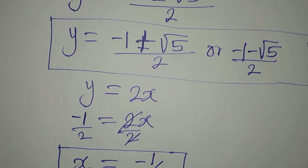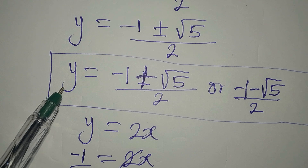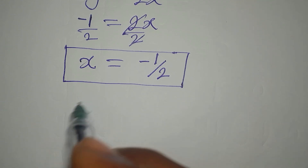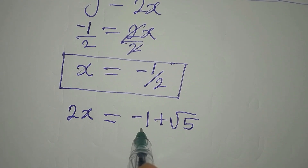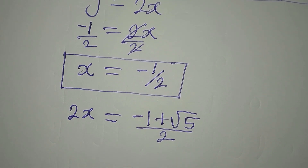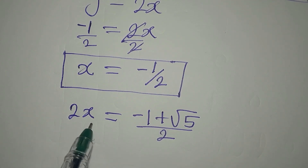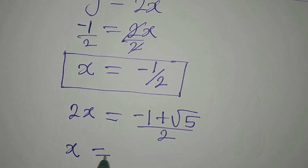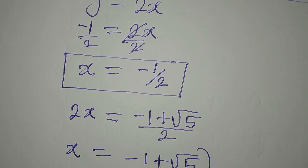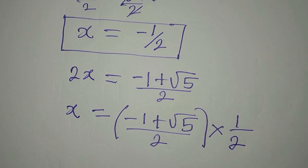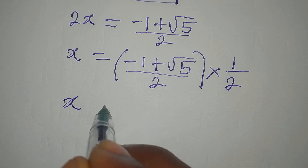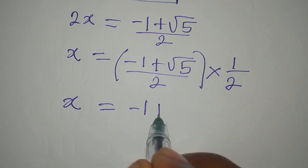To get the other values, in place of y I'm going to put 2x. So 2x equals minus 1 plus square root of 5 over 2. Our x is going to be equal to minus 1 plus square root of 5 over 2, multiplied by 1 over 2. Remember, multiplying by 1 over 2 gives you half of that. So the second value of x is minus 1 plus square root of 5 over 4.